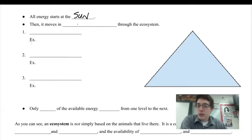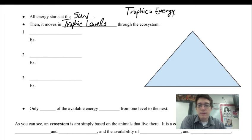All energy starts at the sun, and then it moves in levels or trophic levels through the ecosystem. There are different levels, and these are called trophic, and trophic is a fancy word for energy. So trophic equals energy. And we can split an ecosystem up based on the energy that is available there.